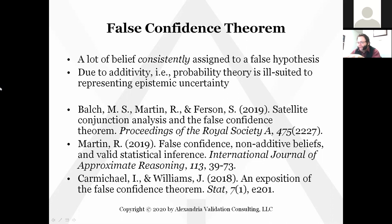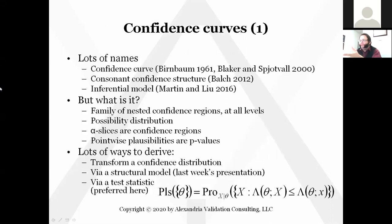Ryan went over that last week, so we're going to move on to confidence curves. This is the framework we're using right now that inherently avoids the false confidence problem. It goes by a lot of names. 'Confidence curve' is the oldest and simplest name, so that's what I'm going with today — that goes back to Birnbaum in 1961. In 2012, I was calling them consonant confidence structures, and I still do occasionally. Ryan Martin from last week calls them inferential models.